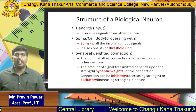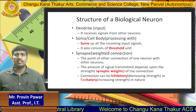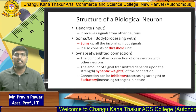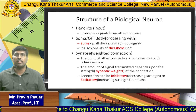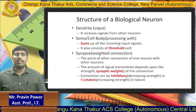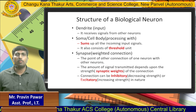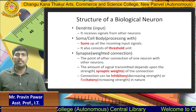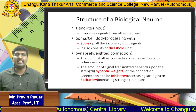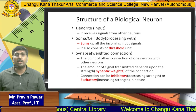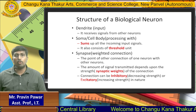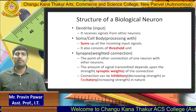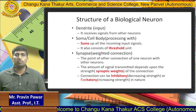A connection can be inhibitory, meaning it decreases the strength of a signal, or excitatory, meaning it increases the strength. For example, if we need a 50-watt bulb glowing, we require that much excitatory strength — we are increasing the strength of the light. If we require only a 10-volt bulb, we use an inhibitory connection, decreasing the strength of that light.